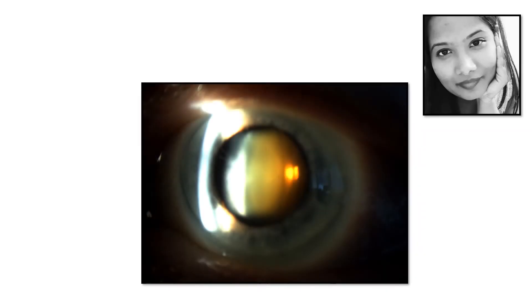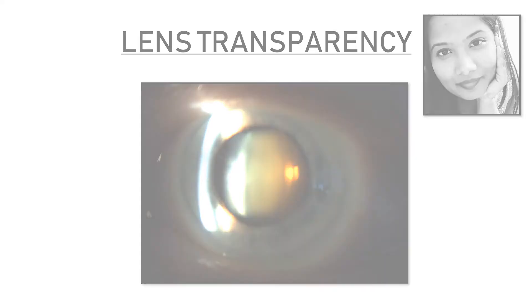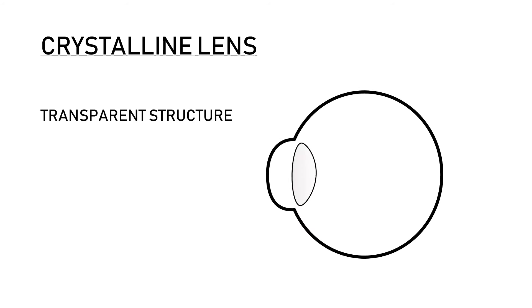Welcome to EyeCare Central. This is a short video in which we will be discussing lens transparency and cataract formation. A healthy crystalline lens is a transparent structure, and many factors are responsible for maintaining its transparency. We will discuss them one by one.